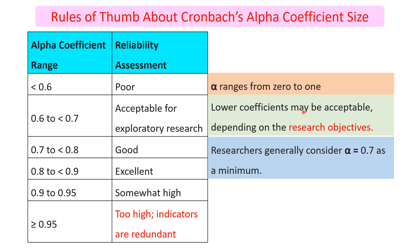A lower coefficient may be acceptable depending on the research objectives, as our research objective matters. According to the research objective, we may sometimes accept a lower coefficient alpha value — for example, if our objective is exploratory research.